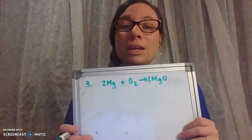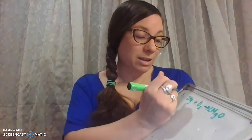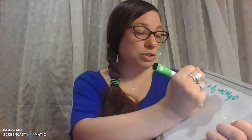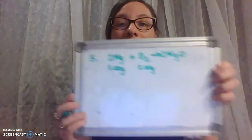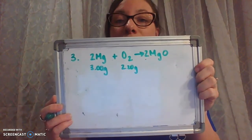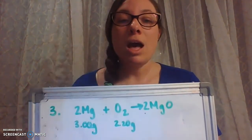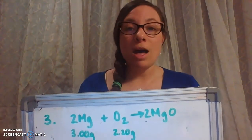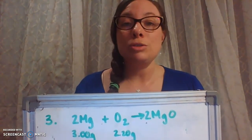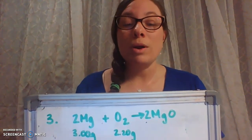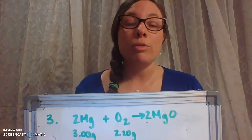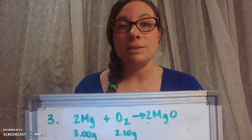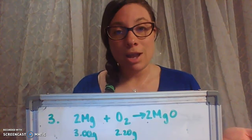We're starting with three grams of magnesium and 2.2 grams of oxygen. Underneath each of those reactants, I listed the amount we were starting with. In the previous problem, I said there were two ways to determine the limiting reactant. We used one of those ways — converting both given amounts of reactant to the same product to see which one produced less. The one that produces less is your limiting reactant.